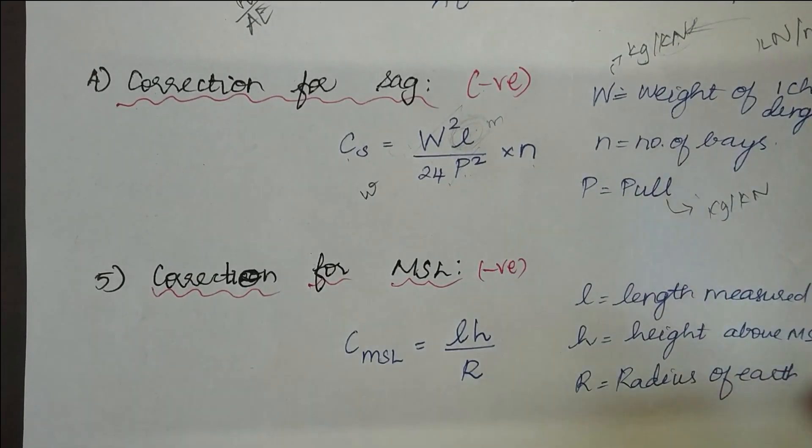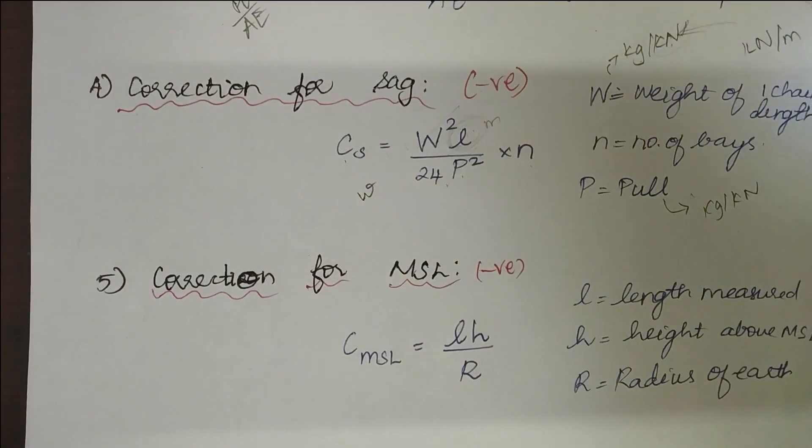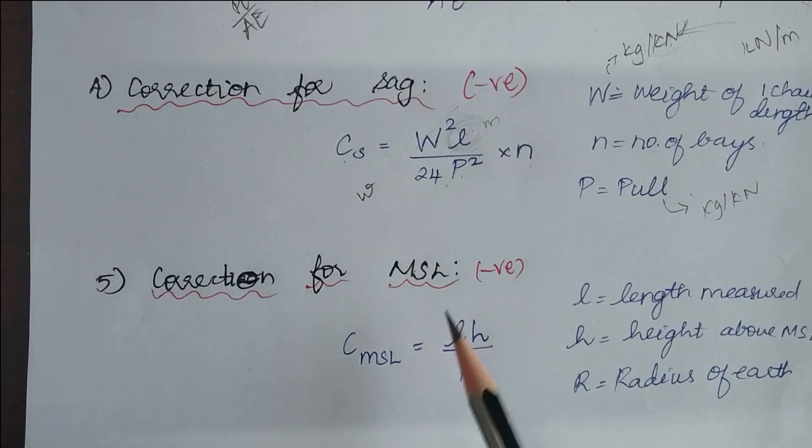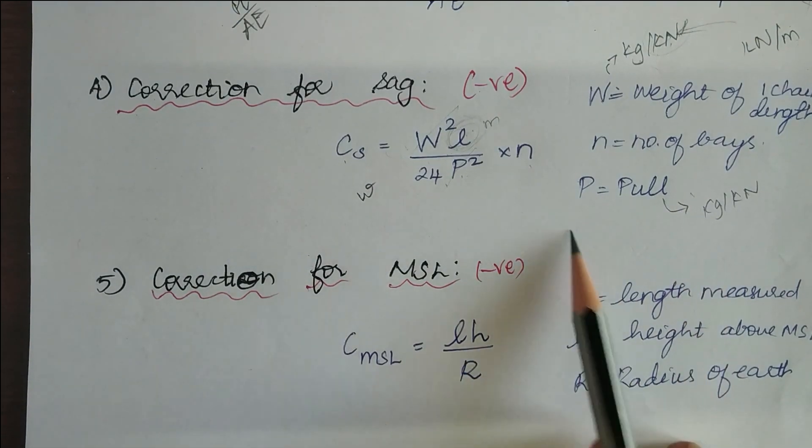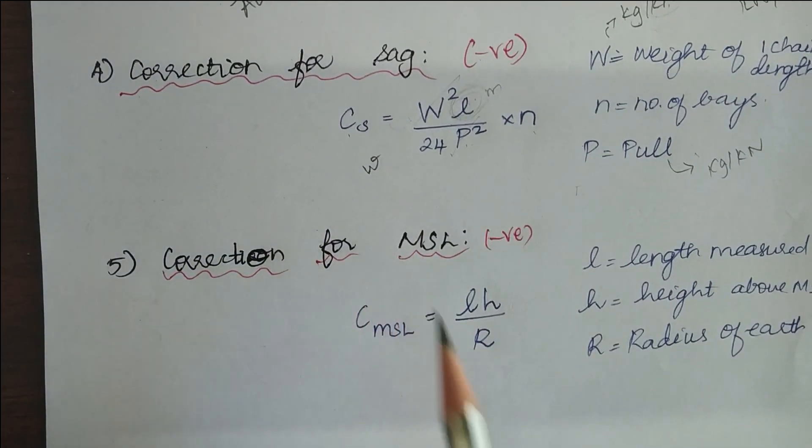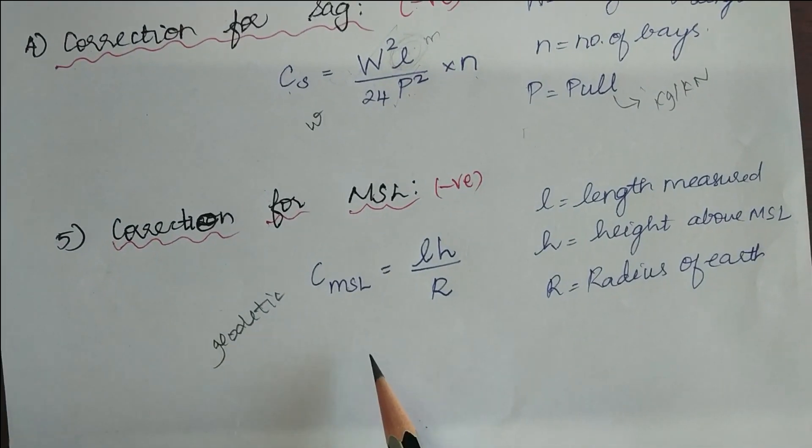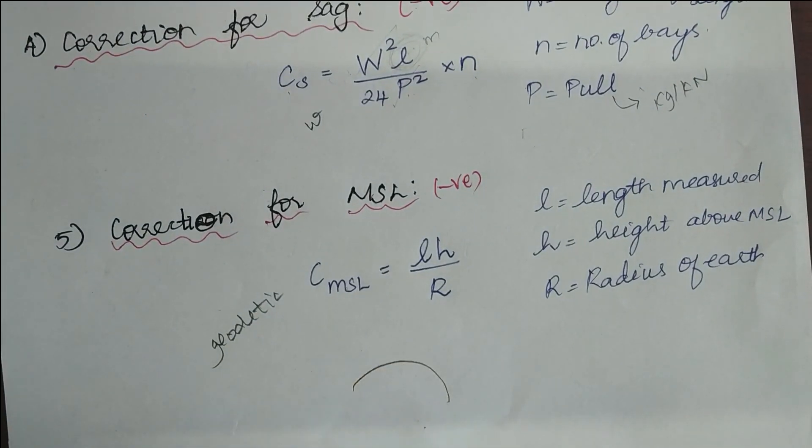And the last correction we are going to see today is the correction for MSL. MSL is mean sea level. Like sag, the correction for MSL is also always negative. So this arises when we go for geodetic surveying. In geodetic surveying, we will take the curvature of the earth into account.